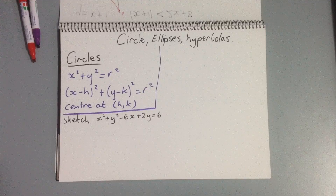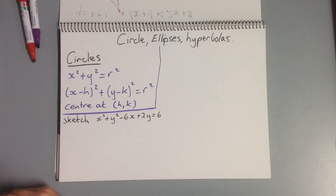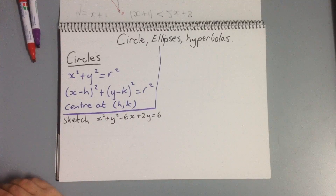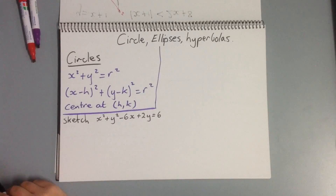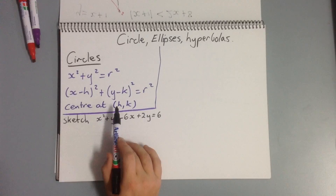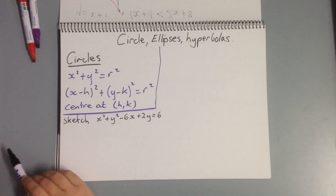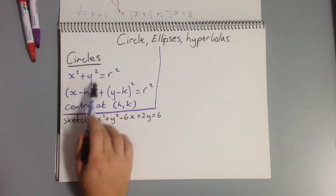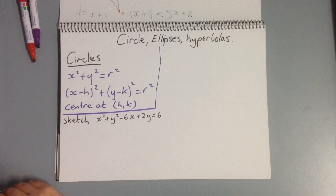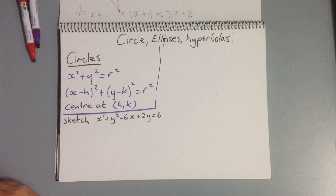Our general equation for a circle is x squared plus y squared equals r squared. But we can often extend that and say we've got x minus h squared plus y minus k squared equals r squared. So our center of our circle is at (h, k) and it has a radius of r units. In the first case, our center is just simply the origin. This is our translated version of our equation.